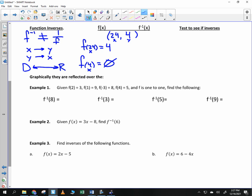If I switch it and I do inverse. If I do F inverse of four, what that means is instead of an X value, that's the Y value. So if I have a Y value of four, what's the X value that corresponds to it? 24.